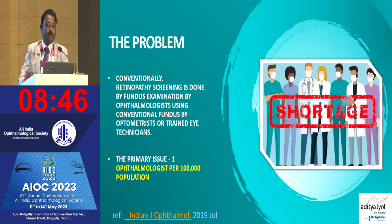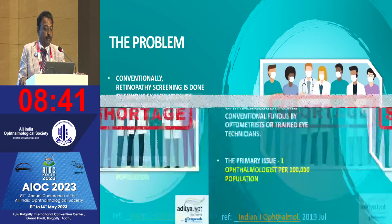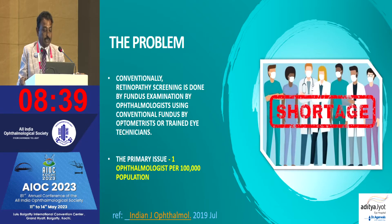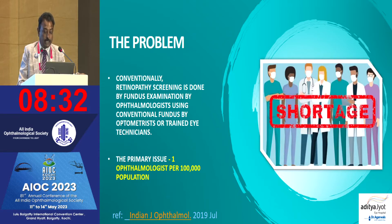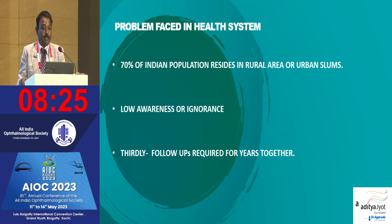Conventionally, retinopathy screening is done by fundus examination by ophthalmologists using conventional fundus cameras, by optometrists, or trained eye technicians. The primary issue in India is we have only one ophthalmologist per 100,000 population, as published in Indian Journal of Ophthalmology in 2019. Seventy percent of the Indian population resides in rural areas or urban slums.